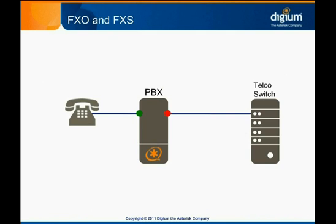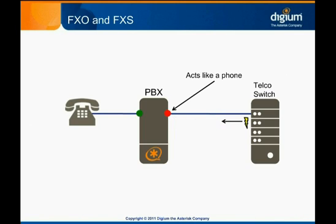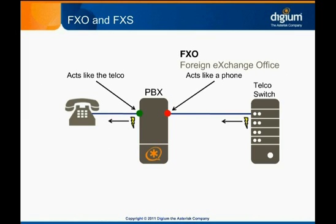There are two different types of analog ports, based on the function and behavior of the circuit. Remember that the switch equipment at the telephone company powers the circuit by providing voltage on the line. The phone side of the circuit must not provide its own voltage to the line, or the line card in the telco switch is likely to be damaged. In order for Asterisk to connect to a phone line provided by the telco, it must behave like a phone and not provide voltage. An FXO, or foreign exchange office port, receives dial tone, connects to the office, and talks like a station or phone.